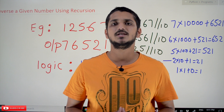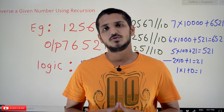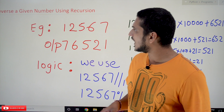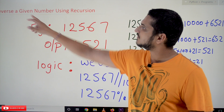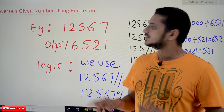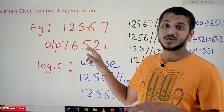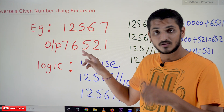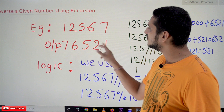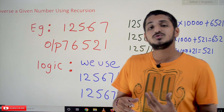The link for the playlist is provided in the description below. Coming to today's example, we are going to identify reversing a given number using recursion. Suppose 12567 is the given number — we have to reverse it, meaning 76521 is the output we have to generate.